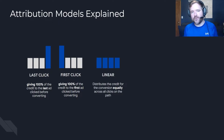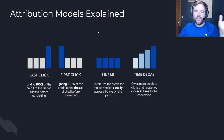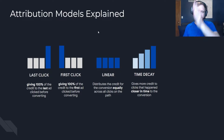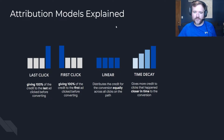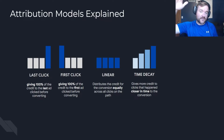An attribution model that distributes credit equally across the entire conversion path is called the linear attribution model — it simply assigns equal credit to every touchpoint along the path. You've then got the time decay attribution model, where the closer you get to that final conversion action, the more credit is given. So if there are 20 touchpoints, that first touchpoint gets the least amount of value, and the final touchpoint gets the most.